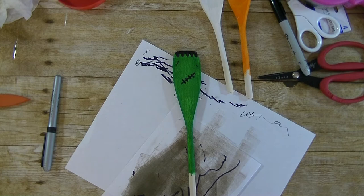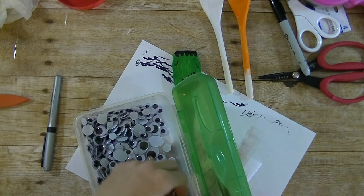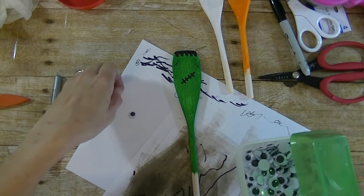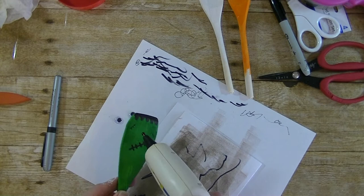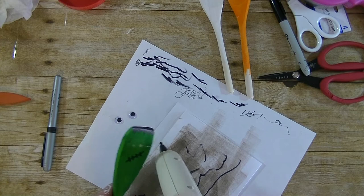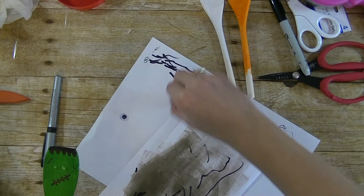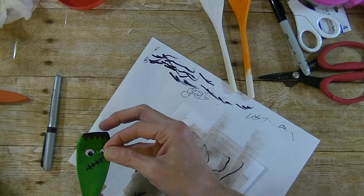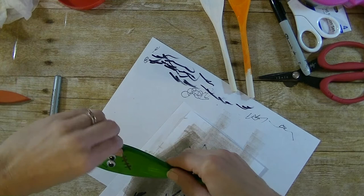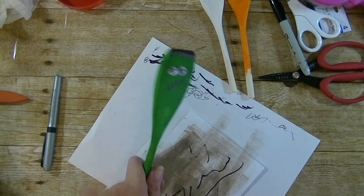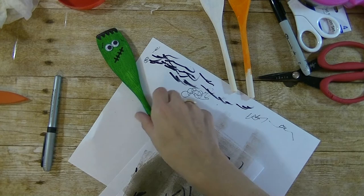Now again, back to the googly eyes. Let me grab my googly eyes. I'm going to grab the smallest I have here. Back to our hot glue gun. I'm just going to put a dot right there and one right there. Hardest part is picking them up. I think the eyes make it. Looks like a Frankenstein.